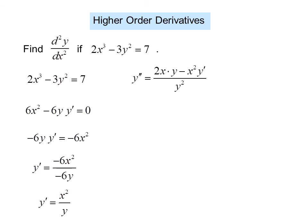So the second derivative is the derivative of the first derivative. So taking the derivative of y prime using the quotient rule, I get y double prime equals 2x times y minus x squared y prime. Notice once again we need to use the chain rule over y squared.